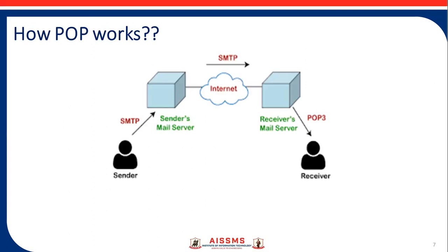The following figure shows how POP works. POP works by contacting your email server and downloading all of your new messages from it. Once they are downloaded to your PC or Mac, they are deleted from the email server. This means that after the email is downloaded, it can only be accessed using the same computer. If you try to access your email from a different device, the messages that have been previously downloaded won't be available to you.